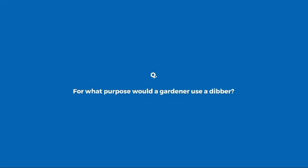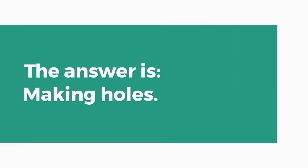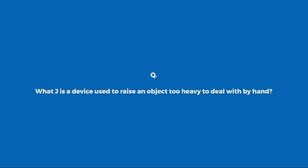For what purpose would a gardener use a dibber? Making holes. What J is a device used to raise an object too heavy to deal with by hand? Jack.